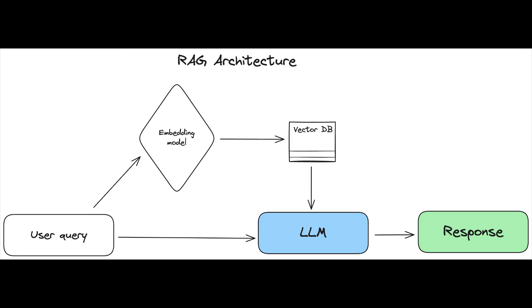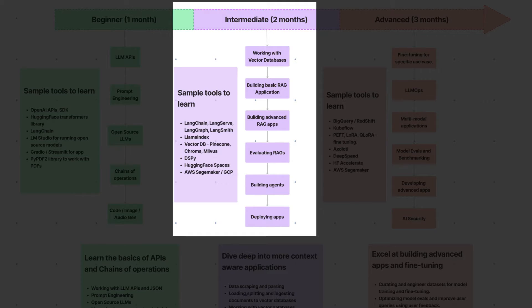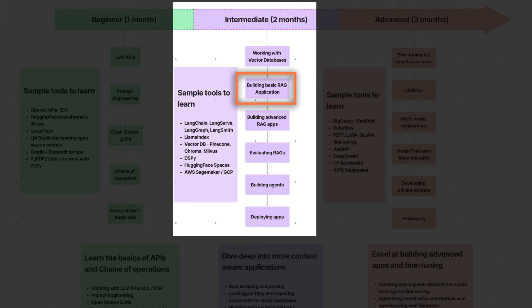The next stage is the intermediate stage, where you are going to go deep into developing more advanced applications like retrieval augmented generation RAG pipelines and agents. This is going to take you close to two months to develop the required skills. The first skill you'll need is an understanding of vector embeddings, how to store those vector embeddings in vector databases. You should know how to work with those databases, how to retrieve those embeddings, and then build RAG pipelines where retrieval is going to be very crucial.